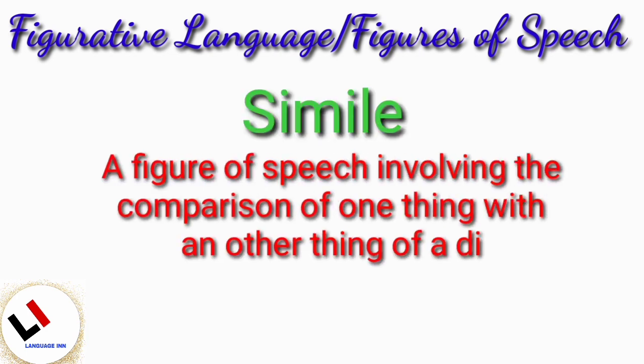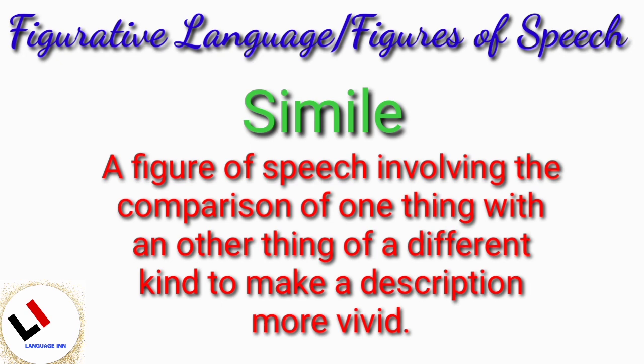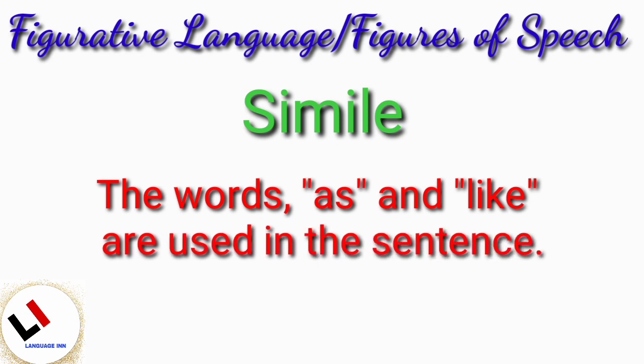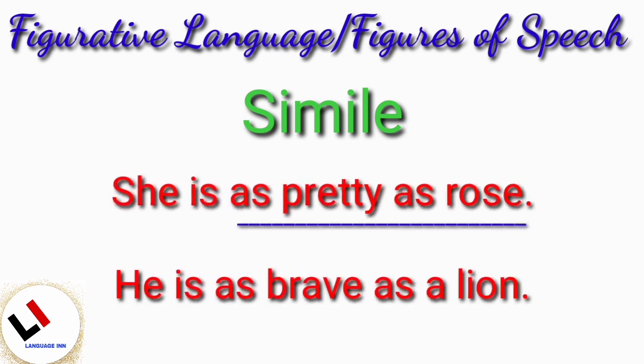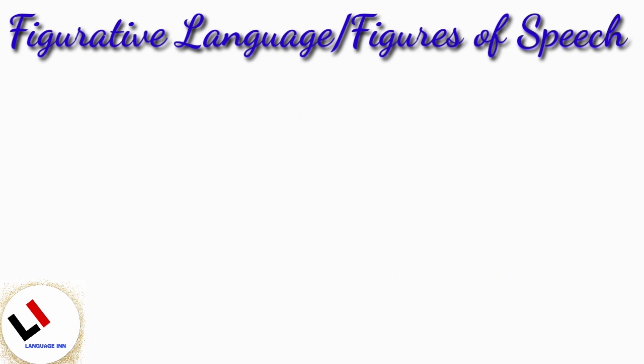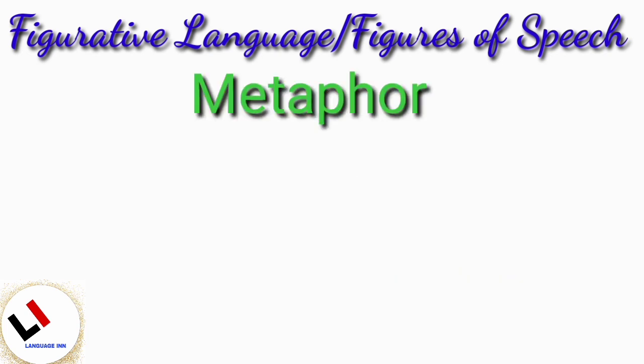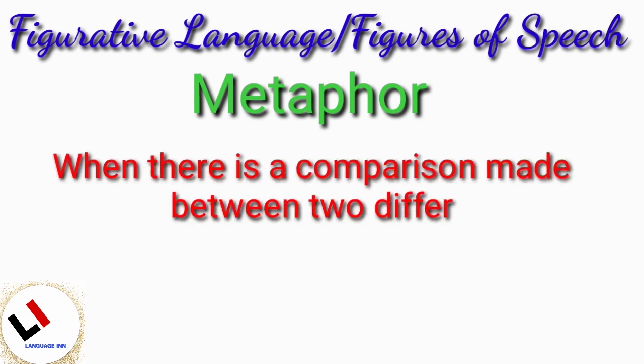Simile. Simile is a figure of speech involving the comparison of one thing with another thing of a different kind to make our description more vivid. The words 'as' and 'like' are used in the sentence. For example: she is as pretty as a rose; he is as brave as a lion.